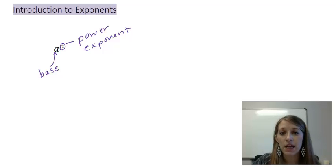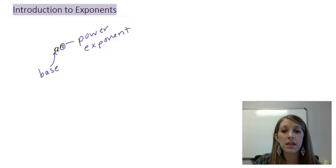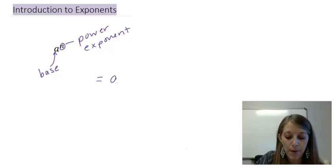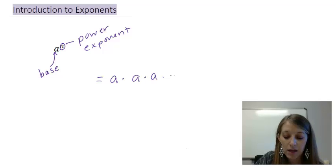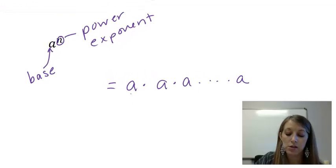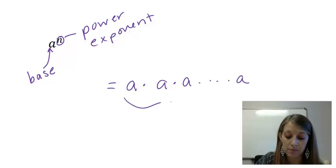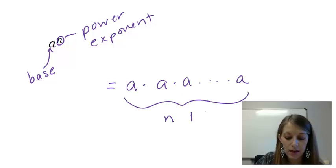The simplest mistake that I see students do is they just multiply these. 'a' to the nth power is not simply a times n. What it is, is the base times itself n amount of times. So base 'a' times a times a, and so on, n amount of times.